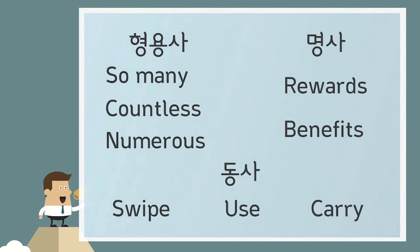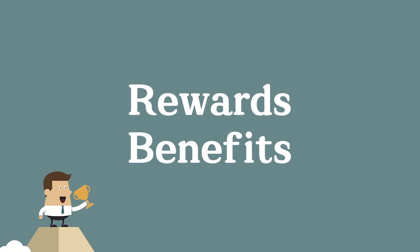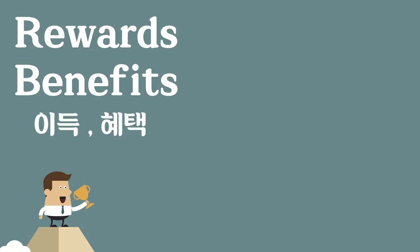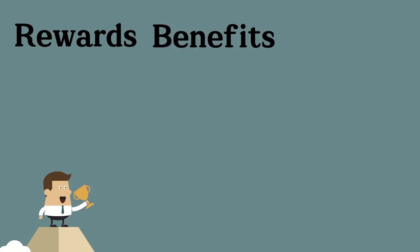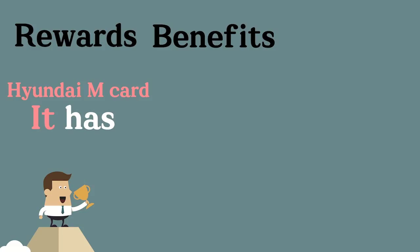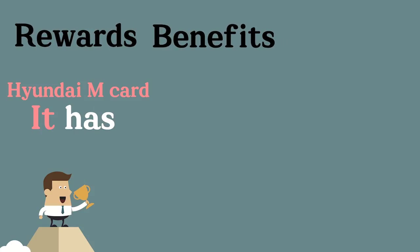아주 좋은 명사들이었죠. Rewards, Benefits — 혜택들, 이득들. Reward는 돌려주는 혜택이고, Benefit도 이득입니다. 이것들을 가지고 주어를 잡아보겠습니다. 주어는 바로 It, 즉 현대 M카드입니다. It has — 하나니까 Have가 아니라 Has죠.